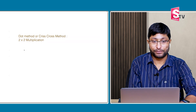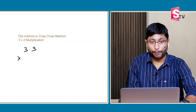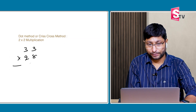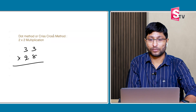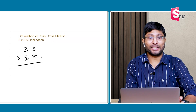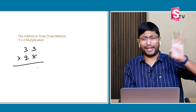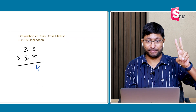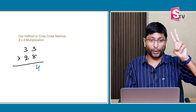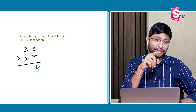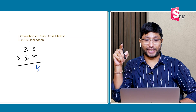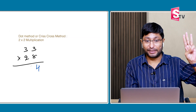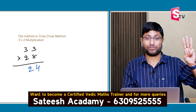33 × 28. Step 1: 3 × 8 = 24. Write down the 4; 2 in the mind. Step 2: 8 × 3 = 24, plus 3 × 2 = 6. 24 plus 6 = 30, plus 2 carry = 32. Write down the 2; 3 in the mind.